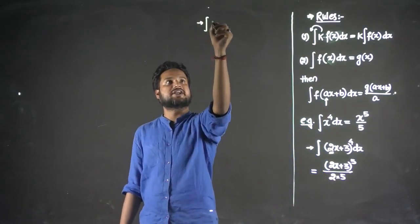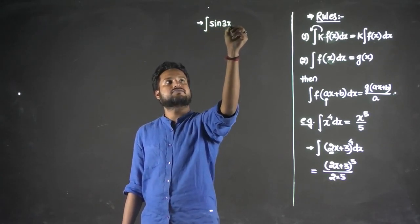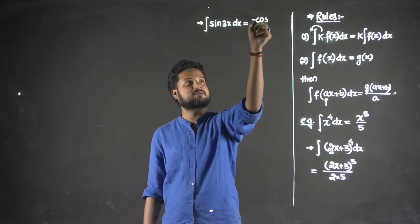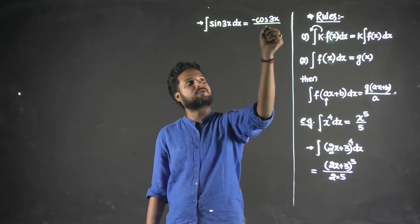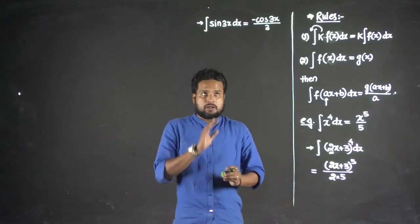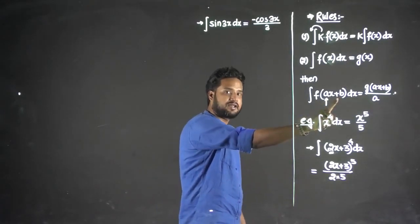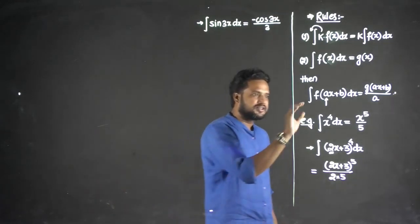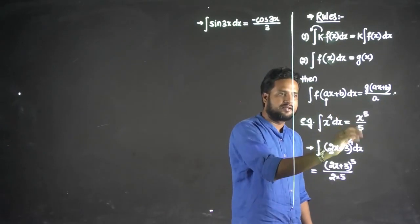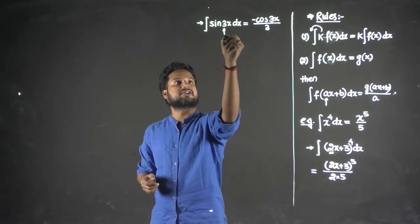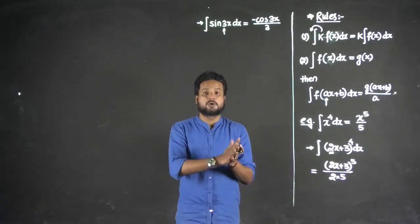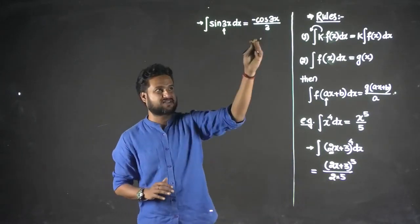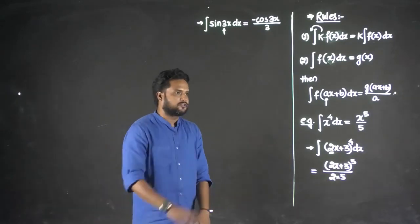Another example: integration of sin(3x). The integration of sin(x) is −cos(x), so we get −cos(3x), but we divide by 3 — the coefficient of x. Remember, the concept says if you have a linear combination ax + b, the b term being 0 is fine. In the answer, just divide by the coefficient of x, which here is 3. Note: I'm not writing +C, but for indefinite integration you always add the constant of integration.